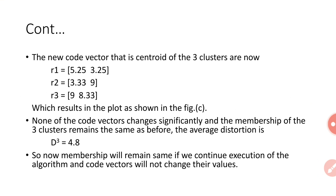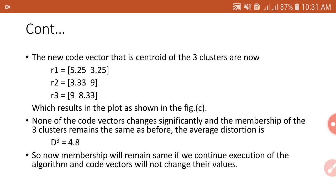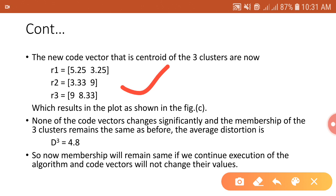In the third iteration, none of the code vectors change and cluster membership remains the same. The distortion for the third iteration is D3 = 4.8, which equals D2. Since no code vectors change further, the algorithm stops. The final code vectors for this training set are R1 = (5.25, 3.25), R2 = (3.33, 9), and R3 = (9, 8.33). This is how you design a codebook using the LBG algorithm.